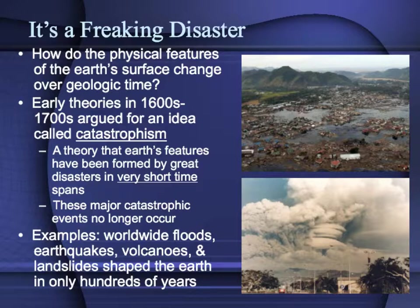The mountains were thought to be where they have always been. The oceans are where they have always been. Rivers have always run the same course. But then it was realized that the Earth's surface is very dynamic and does change over time. So we're going to compare and contrast a couple of different schools of thought.